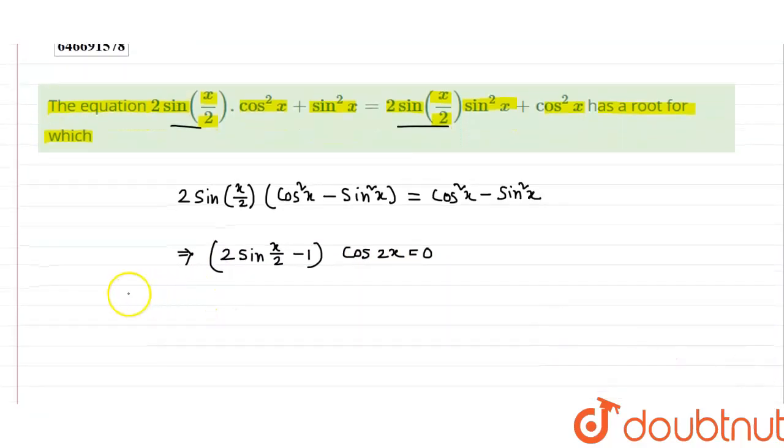Cos 2x means cos²x minus sin²x. Hence, cos 2x equals 0.